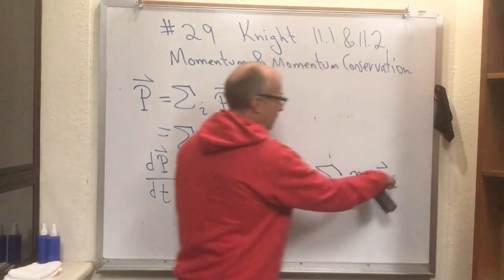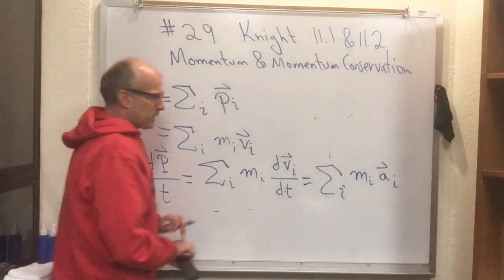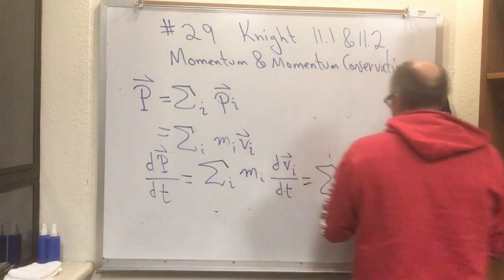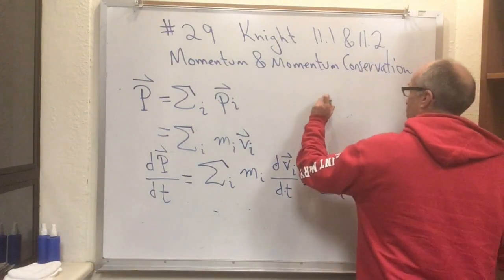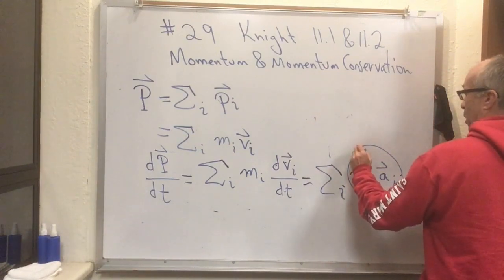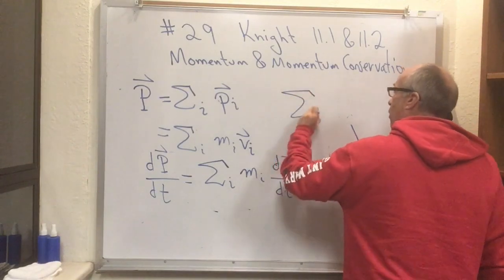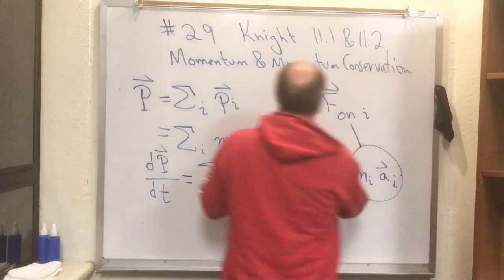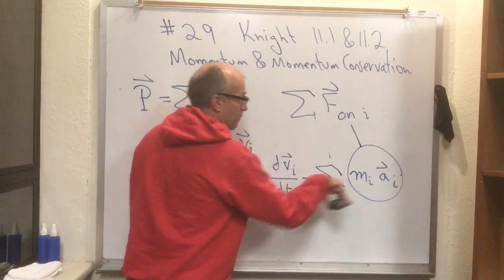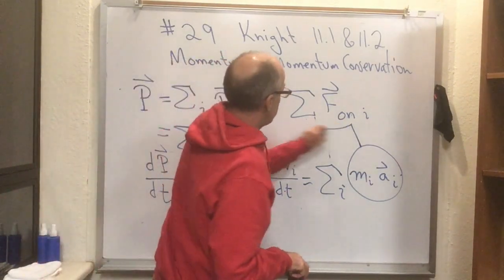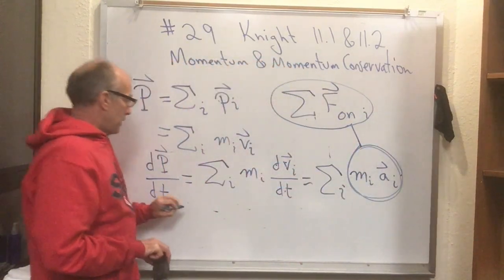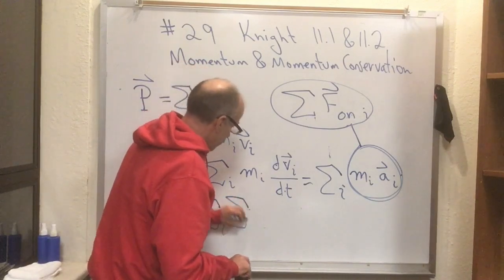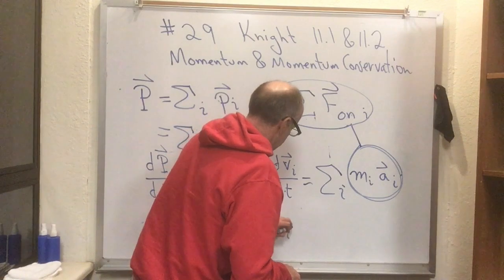But this is the combination that appears on the right-hand side of Newton's law. This, right here, is what appears for the i-th particle on the right-hand side of Newton's law. So, let's go explode this part of the problem a little bit. This is equal to the sum over all the forces on particle i. So, we have a sum over all the forces on particle i inside this sum over i.